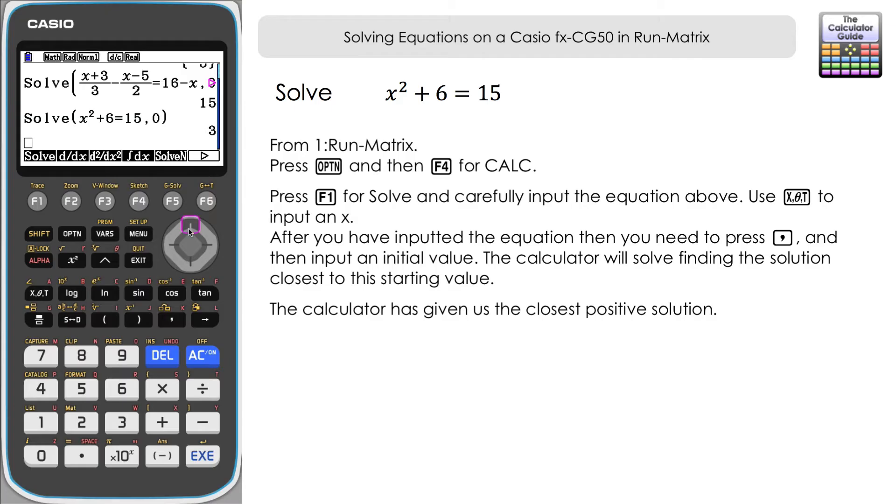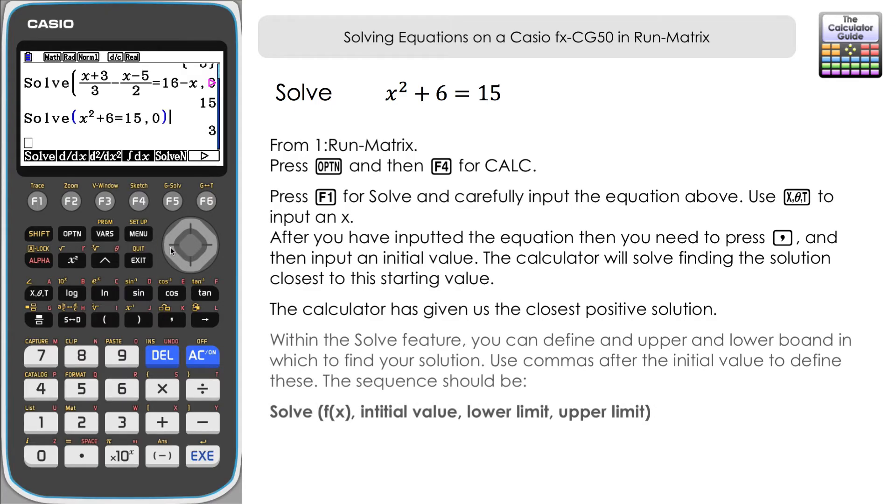So if we add another comma and then say let's add a lower limit of -10 comma and then an upper limit of zero. If we press execute then we get -3. The calculator solved that for a starting value of zero but looking between the limits of -10 and zero to find our solution. Well there's only -3 in that region that satisfies that.